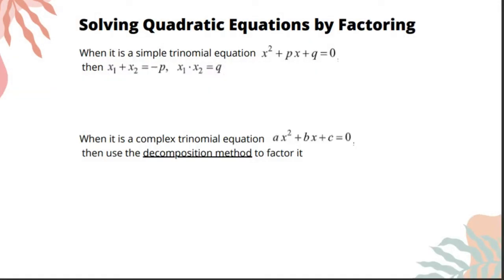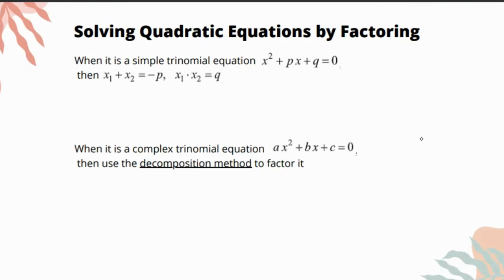We can solve quadratic equations by factoring. When it's a simple trinomial equation x² + bx + q where the leading coefficient is 1, then x₁ + x₂ is equal to -b and x₁ · x₂ is equal to q. When it is a complex trinomial equation ax² + bx + c, we have to use decomposition. We're going to take a look at the examples in just a few moments.